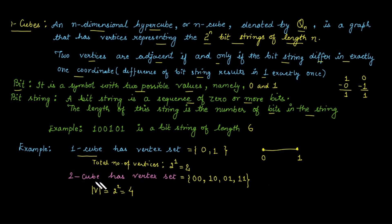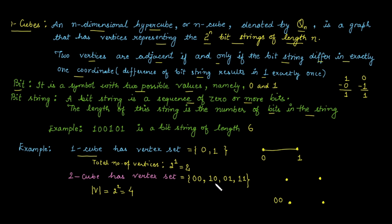Moving to the 2-cube (Q2): the total number of vertices is 2 raised to power 2, which equals 4. The vertices are the bit strings of length 2: 00, 10, 01, and 11. Consider vertices 00 and 10 — take their difference: 1 0 minus 0 0.